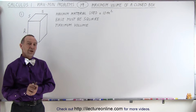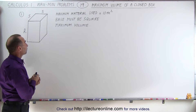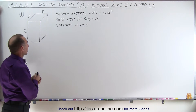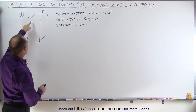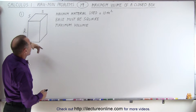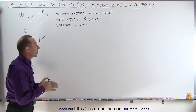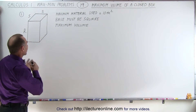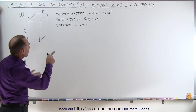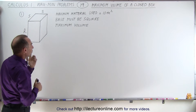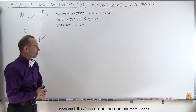Welcome to iLectro Online. Our next problem deals with a box. Here we have a diagram of a box with a square base and a height. The maximum material we're allowed to use to make the box is 10 square meters, the base must be square, and we're looking for the maximum volume of the box.